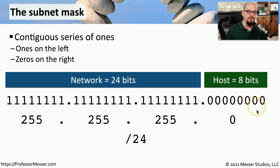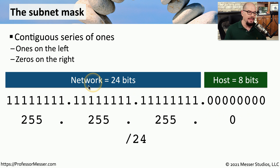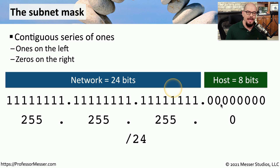The subnet mask is used to delineate the network part of the IP address from the host part of the IP address. All of the 1s designate the network portion. In this case, there are 24 bits of the network portion of the subnet mask, and there are 8 bits set to 0 — that would be the host portion of the subnet mask.